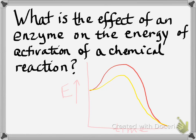I drew a graph. The x-axis is time in seconds, and the y-axis is energy. Low energy is at the bottom, higher energy is at the top. I've got two different lines — one red and one yellow. The amount of energy that has to be put into a chemical reaction for it to go forward is indicated with this double arrow. That's called the energy of activation — E sub a.